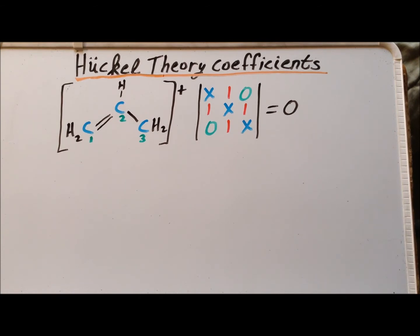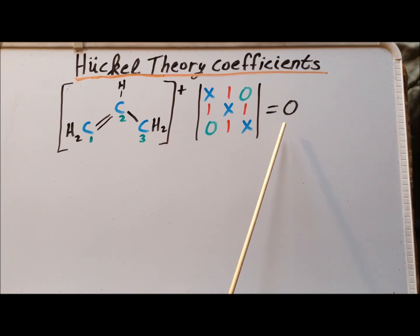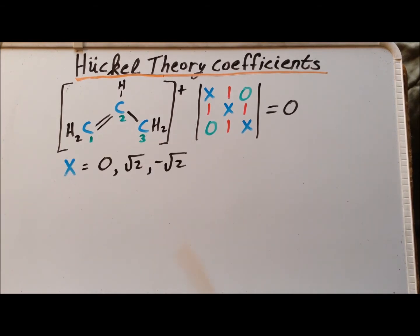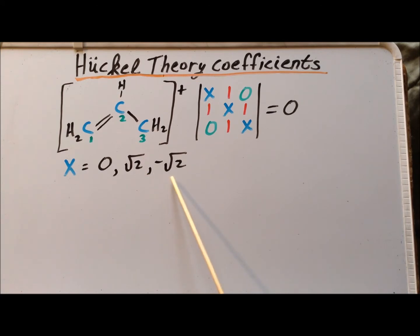The secular determinant equation that we eventually solved is shown here for reference, where we have to solve this 3 by 3 determinant under the condition that it is equal to 0. There are three values of x for which this particular equation is true, as we found in the previous video, and those values of x are 0, the square root of 2, and minus the square root of 2. From that, we are able to interpret the approximate energies of the molecular orbitals in the allyl pi system.